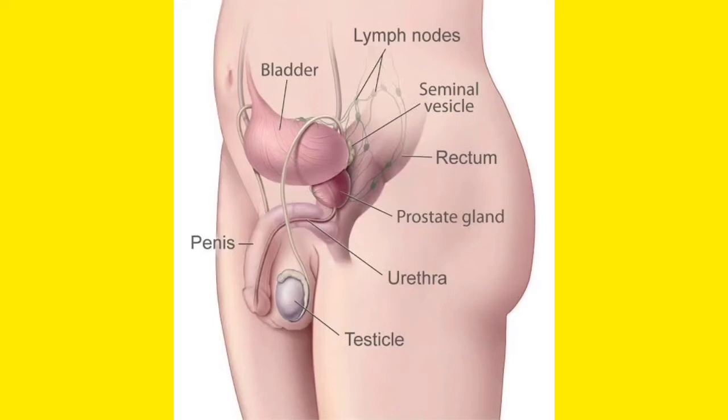When erection occurs, blood flows into these spongy tissues of the penis — the corpora cavernosa and corpora spongiosum — and the penis becomes erect. Below the penis lies the scrotum, which is a sack in which the testicles lie.